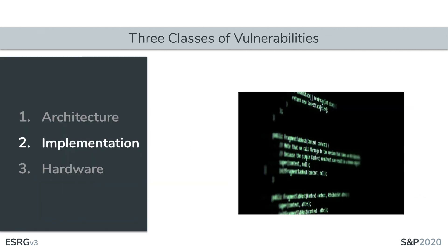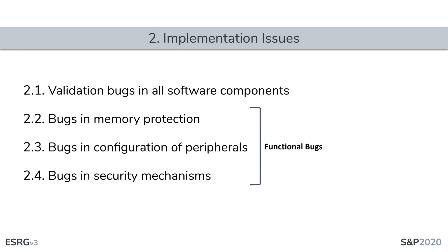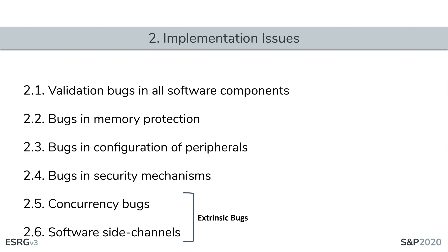Our next topic is implementation issues — these are issues not in the way TEs are designed but in their actual implementation. The types of implementation issues found in our analysis include: validation bugs across the TE from bootloaders to secure monitor, trusted OS, and trusted applications; bugs configuring memory protection and peripherals; bugs implementing security mechanisms; and bugs related to external factors such as concurrency and software side channels.